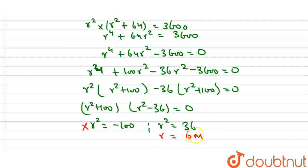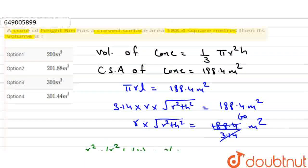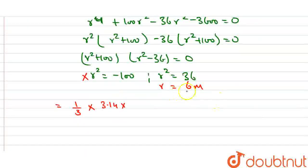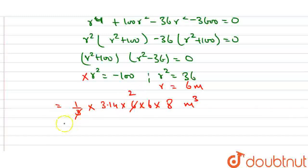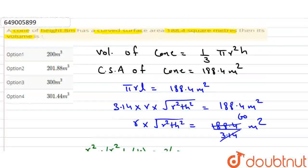Now we calculate the volume of the cone: one-third times pi times r squared times h, which is one-third times 3.14 times 6 times 6 times 8 meter cube. Simplifying: 2 times 6 is 12, times 8 is 96, and 96 times 3.14 gives 301.44 meter cube. So the volume of the cone is 301.44 cubic meters, which corresponds to option 4 — the correct answer. Thank you.